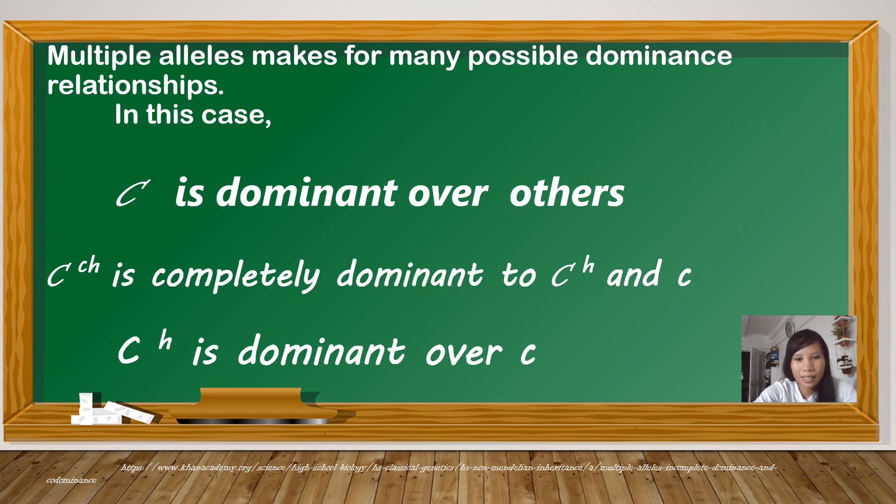And lastly, C raised to h, Himalayan, is dominant over small letter c, albino. So, all in all, the most dominant of all the traits is letter C for black and the recessive one is the allele for albino, small letter c.